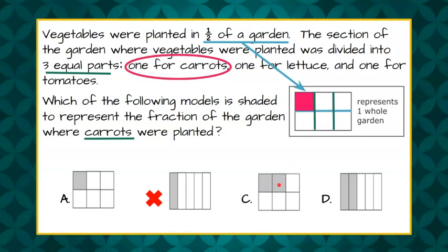Over here in C they have two of the six and we only have one of the six so it can't be C. And D was divided into five equal parts instead of six so we're going to rule out D.